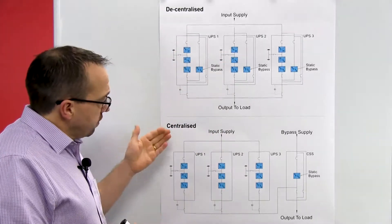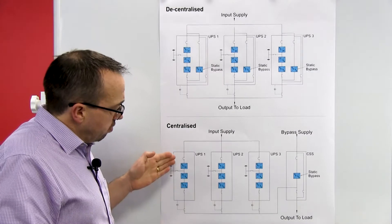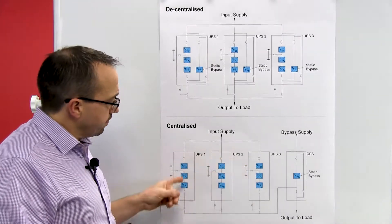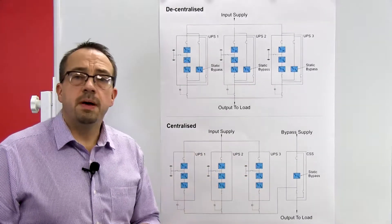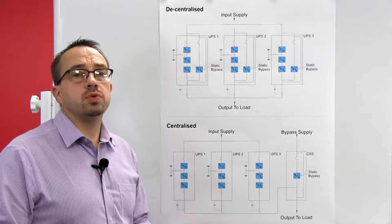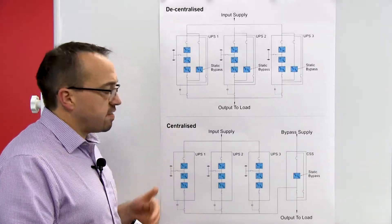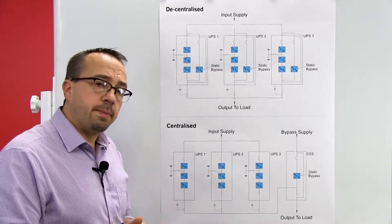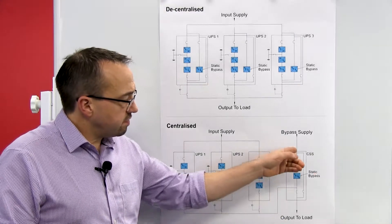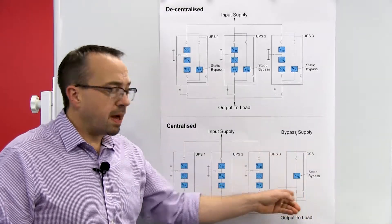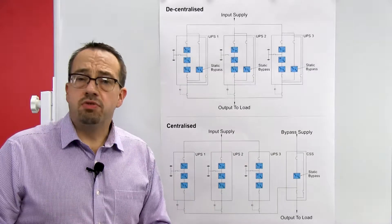In the centralized system we again have the same three UPS systems, albeit this time we don't have any static bypasses within the UPS modules. Because it is a centralized system, all of the static bypass components are located in a centralized bypass cabinet — hence the term centralized.